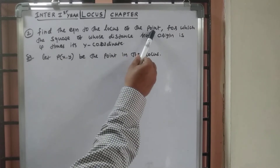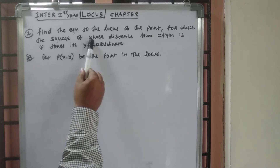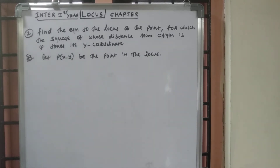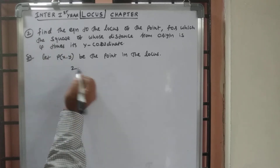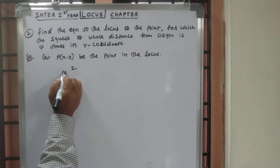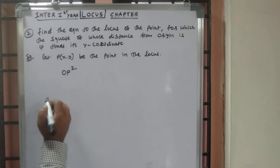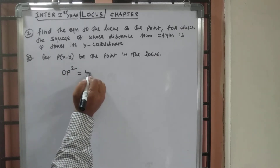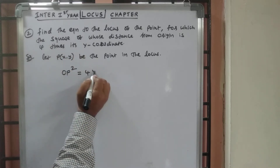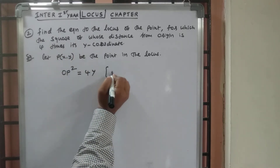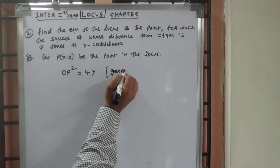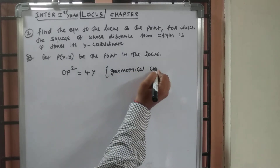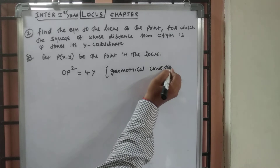Find the equation of the locus of a point, the square of whose distance from the origin is equal to 4 times its y-coordinate. So the geometrical condition is: OP² = 4y.